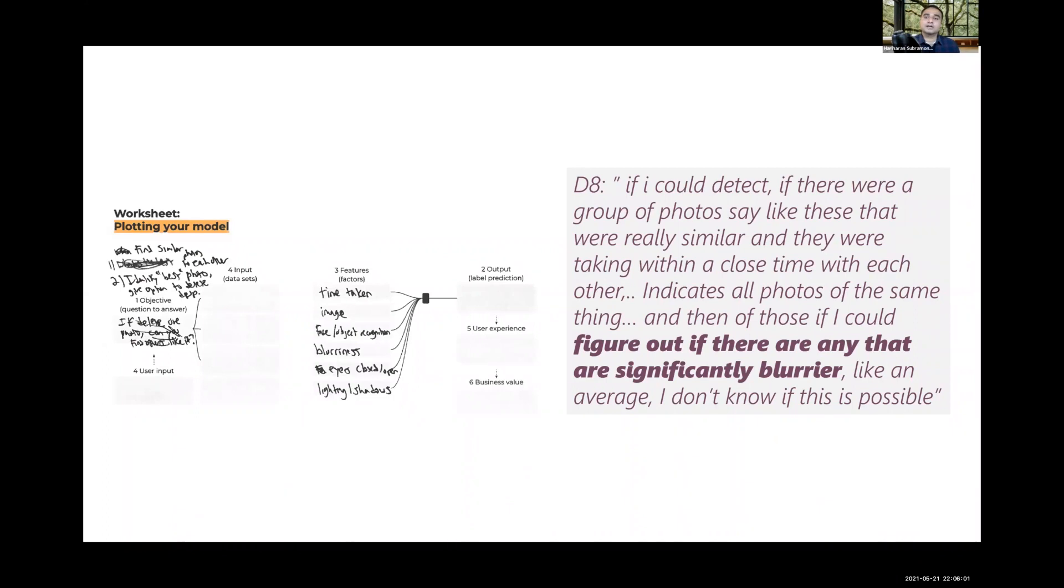For instance, when brainstorming criteria for finding the best photo to keep from a cluster of similar photos, the designer questioned whether AI can detect blurry photos. In this manner, the teams identified several factors, including lighting and shadow, instances in which a person's eyes are closed, whether the individual was smiling, and so on.